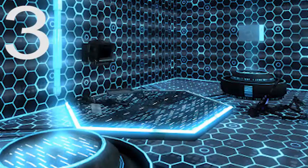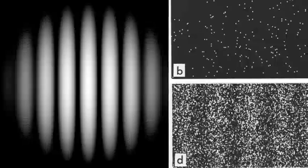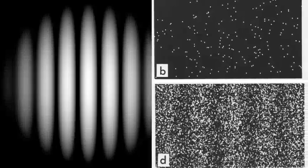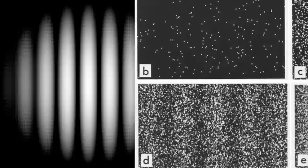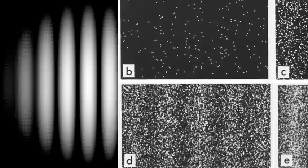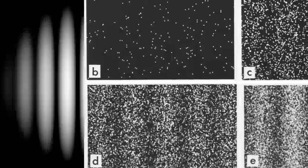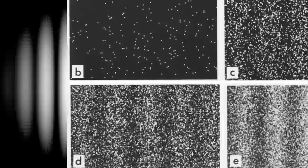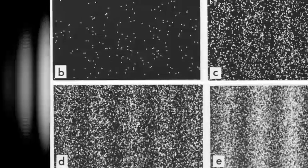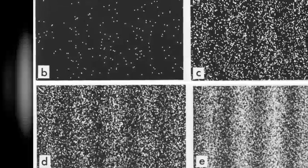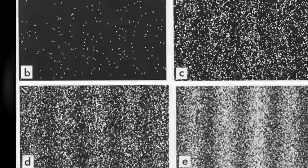Number 3. What we believe shapes our reality. Evidence for this is shown in the double slit experiment. In the basic version of this experiment, a coherent light source such as a laser beam illuminates a plate pierced by two parallel slits, and the light passing through the slits is observed on a screen behind the plate. The wave nature of light causes the light waves passing through the two slits to interfere, producing bright and dark bands on the screen.